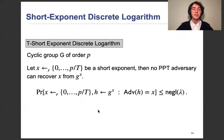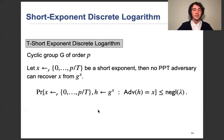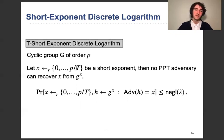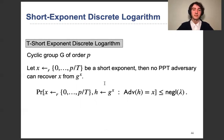What did I mean by short? This is related to the short exponent discrete logarithm assumption, which is at the core of the second construction. Basically, here we have a group G of order p. The exponent, instead of being from 0 to p, is from 0 to p/t — so it's a short exponent. We want that no PPT adversary can recover x from g^x. This can only be secure if this range is super-polynomial, but we hope that once this is the case, the assumption is secure.